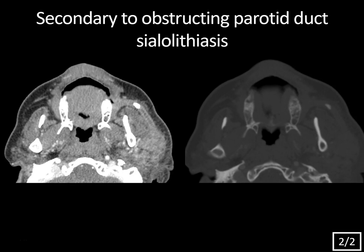Now let's discuss the course of the parotid duct. The duct arises from the anterior aspect of the gland in the parotid space, but then it passes along the surface of the masseter muscle. Here's the left masseter muscle, and there's the right masseter muscle for comparison. At that point, it passes through the buccal space, which is this fat-containing space, and then pierces the buccinator muscle right here. And here's the contralateral buccinator muscle to compare. It opens up at the level of the upper second molar. A landmark for the duct is the facial vein, right here. Often the zygomaticus muscle will be anterior to the parotid duct, so the duct will be the second curved line, and the facial vein will be between these two curved structures, all within the buccal space.